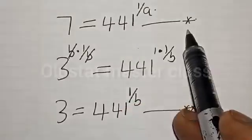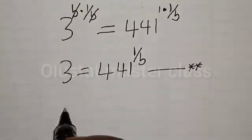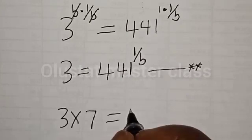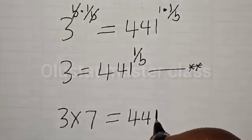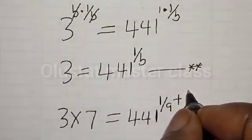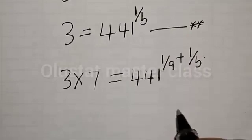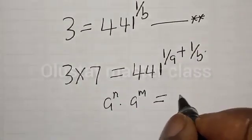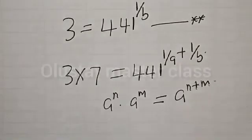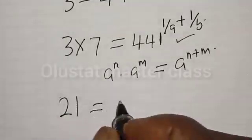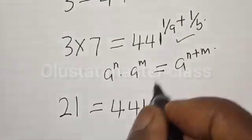Now, let's multiply equation star and equation double-star together. That is, 3 multiplied by 7 will be equal to 441 raised to power 1 divided by A plus 1 divided by B. Now, from here, we have 3 times 7 — that is 21 — is equal to 441 raised to power 1 over A plus 1 over B.